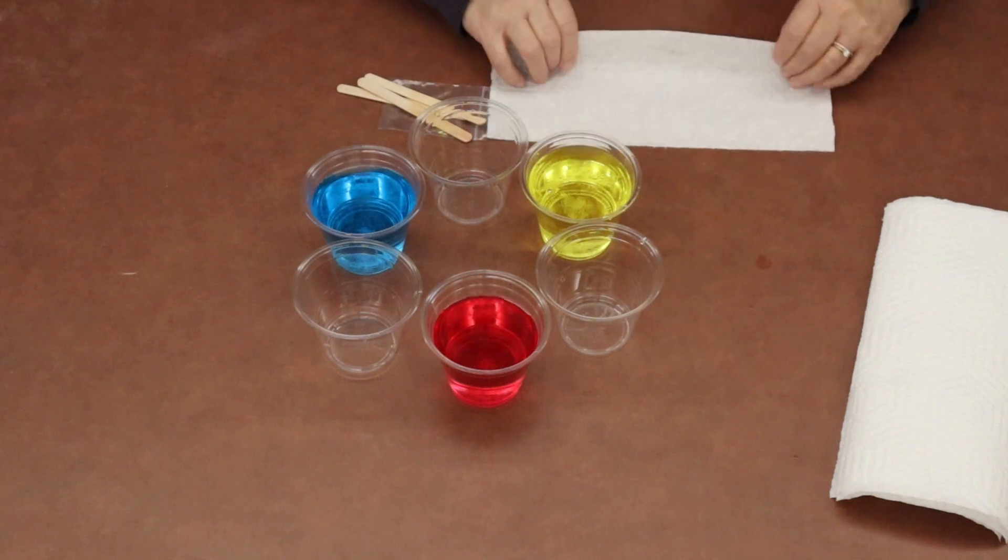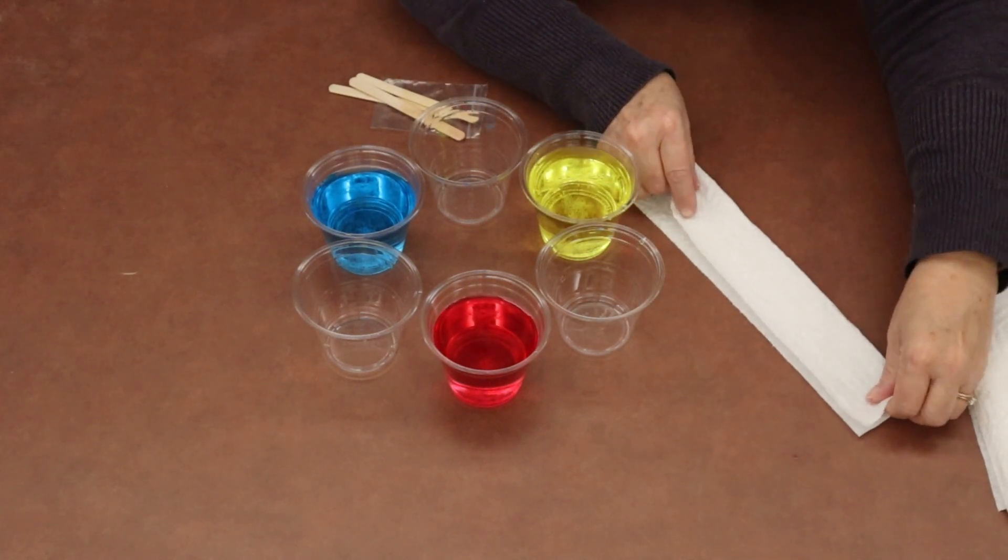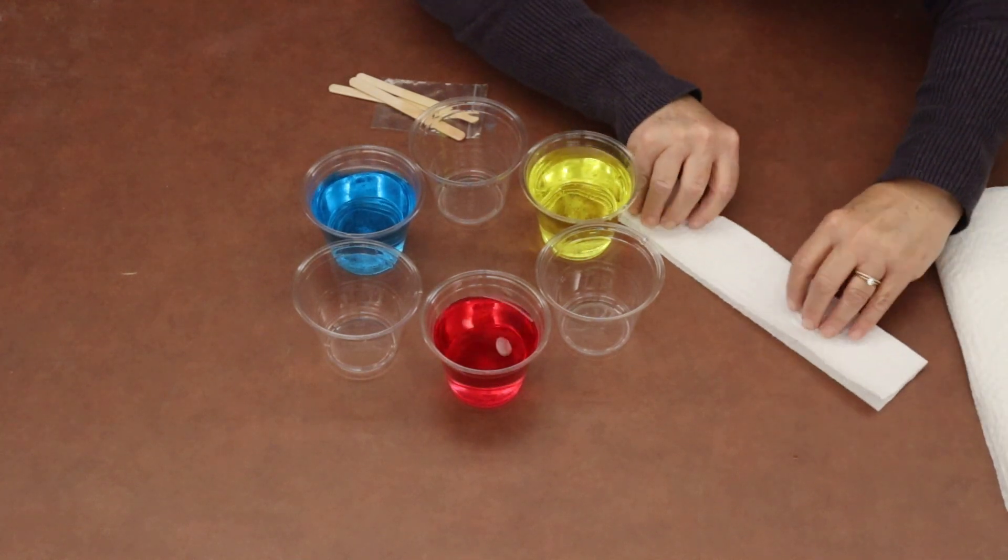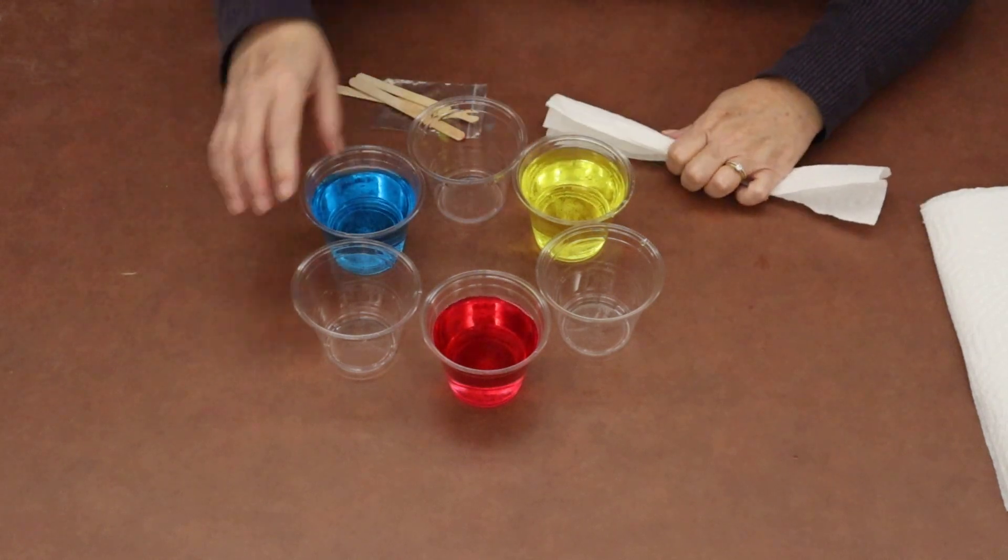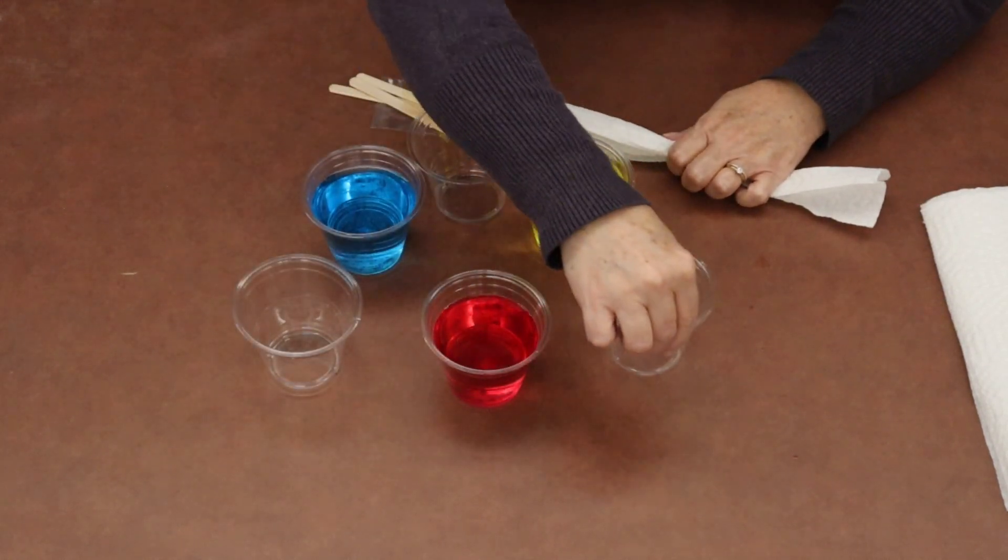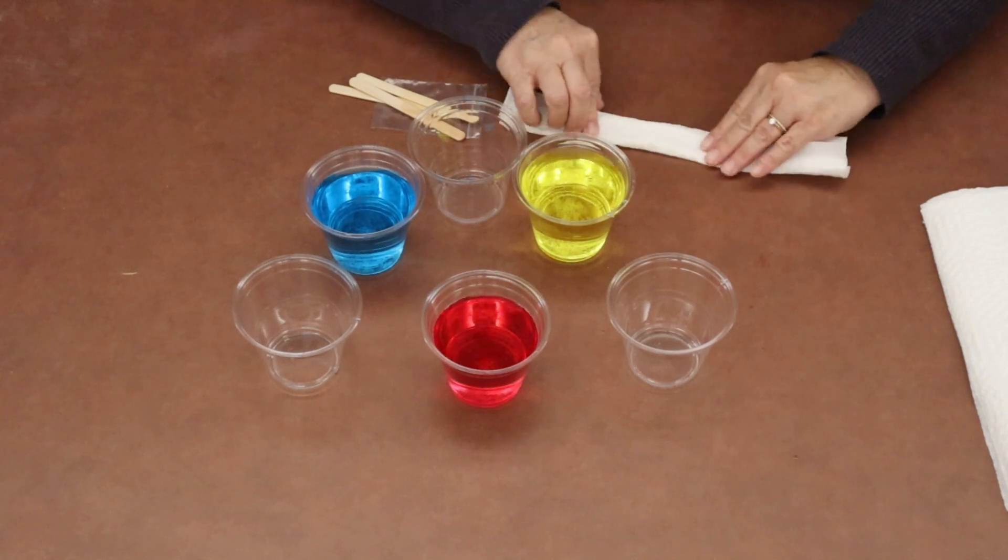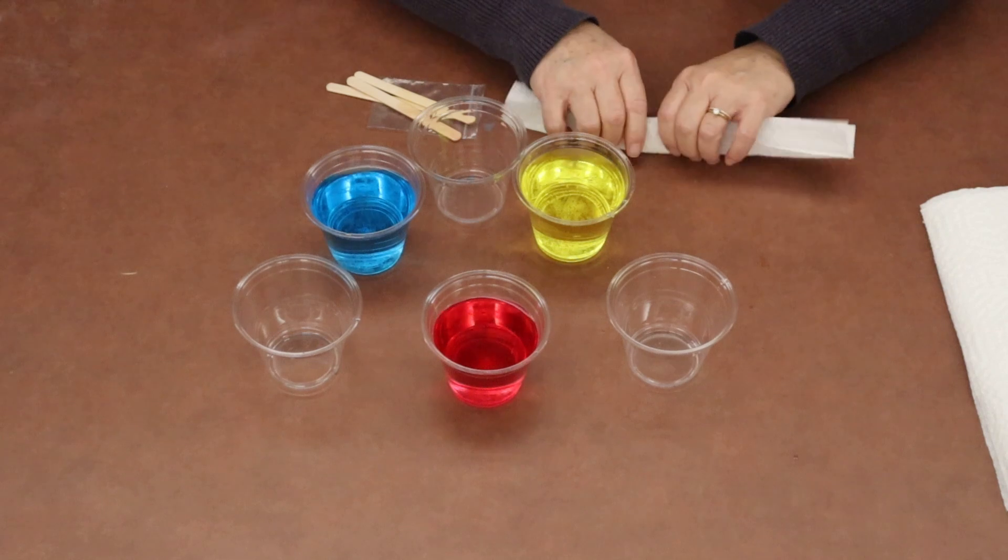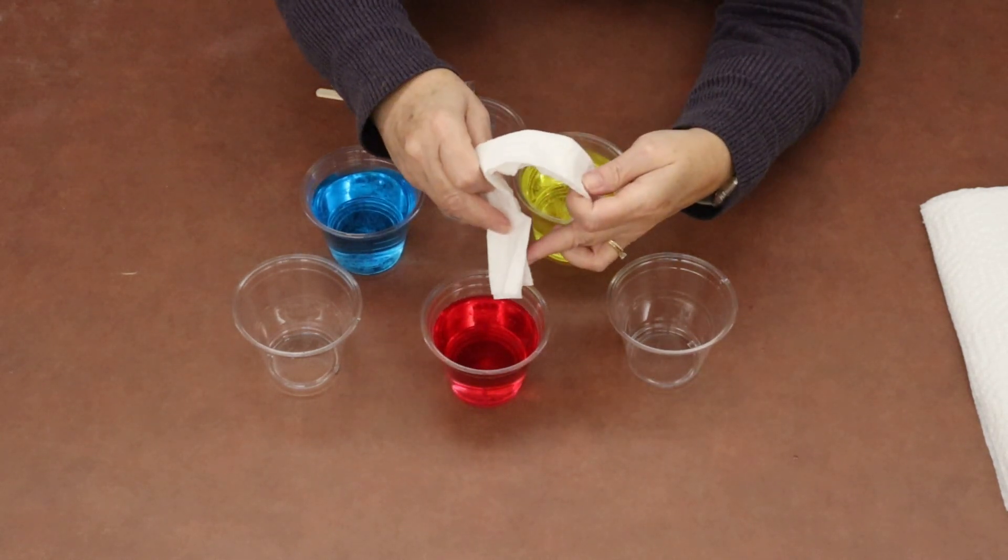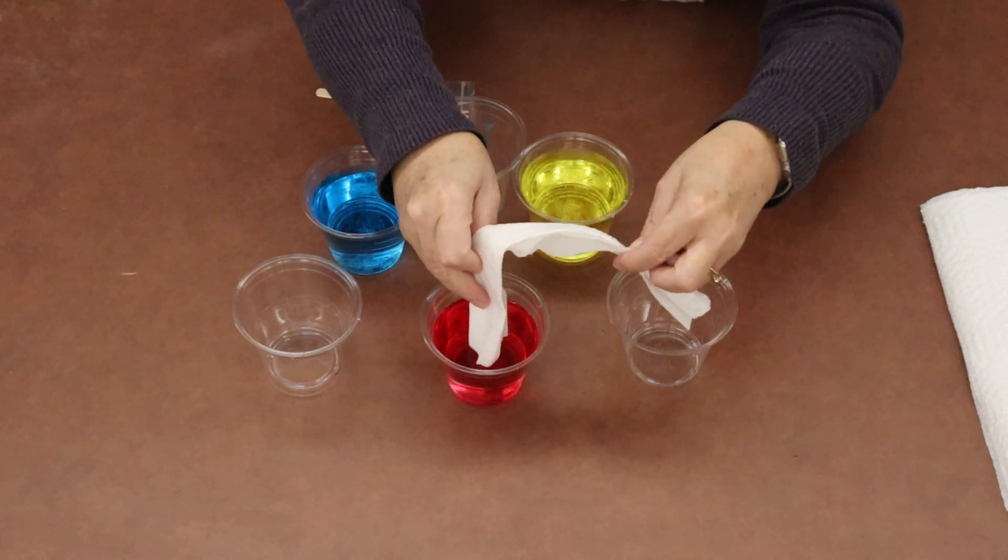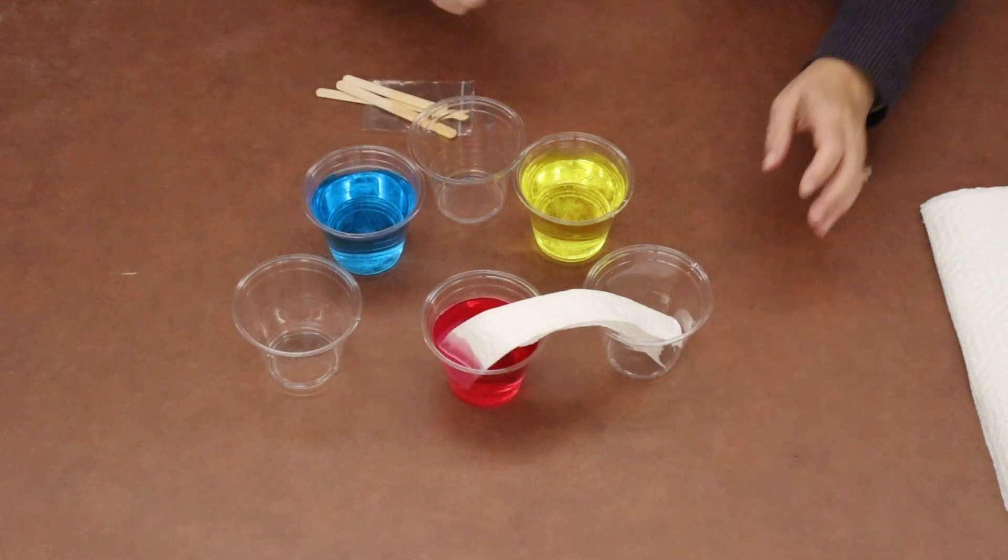What you're going to do is take your paper towel and kind of fold it in half like this, and then fold it in half again. Then you're going to take the end of your paper towel, stick it in one color, and then stick it in the empty cup next to it.